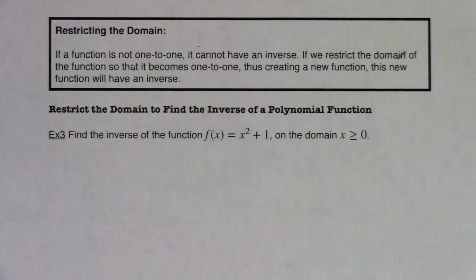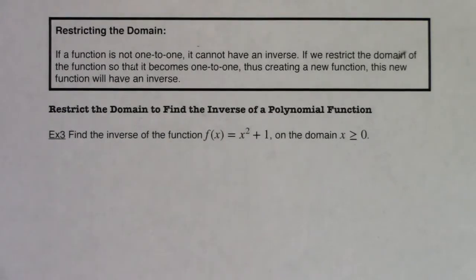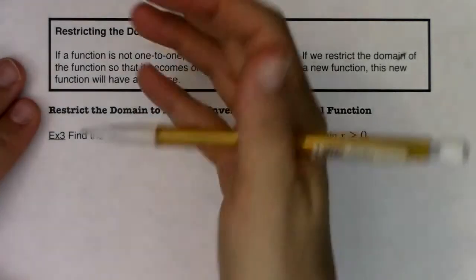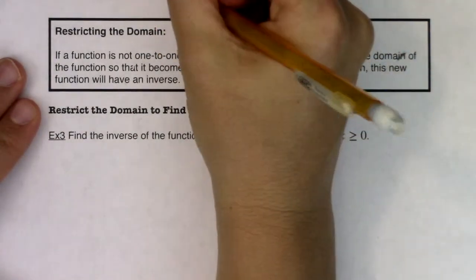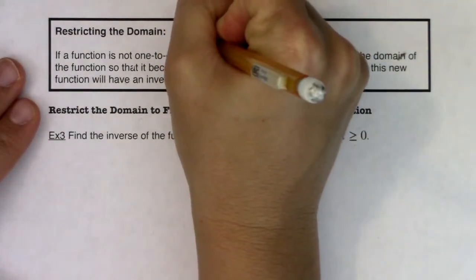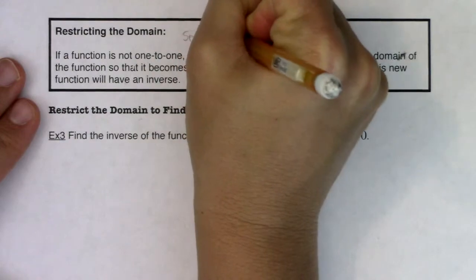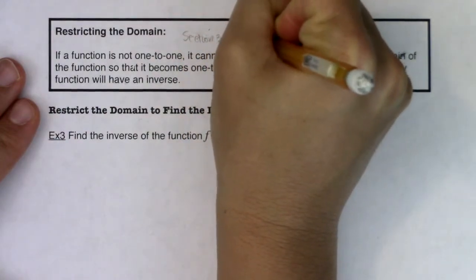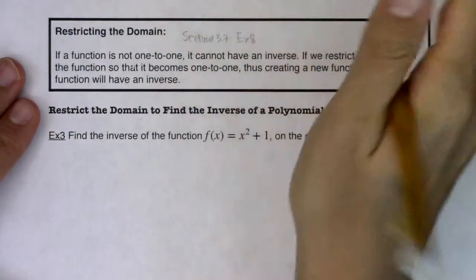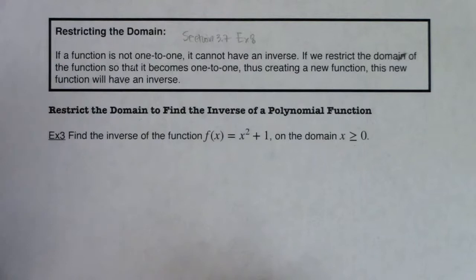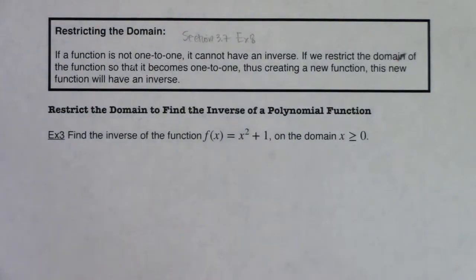Hey Math 31, welcome to example three. This is when we're going to look at restricting the domain of a function that is not one-to-one so that we can make it one-to-one and find its inverse function. If this idea sounds familiar, it's because we took a look at it in section 3.7, example 8. A lot of this section mirrors what we did in section 3.7 — the example problems are just a little bit more intricate.